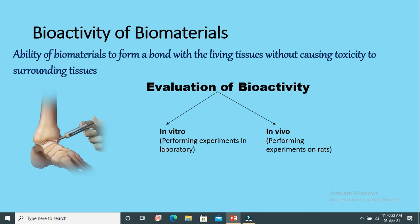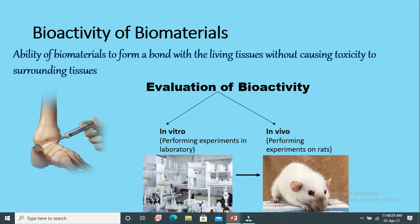In vitro, we perform the experiments in the lab, and for in vivo, we perform the experiments on rats. First we evaluate in vitro, then we go for in vivo. If in vitro confirms the bioactivity of our biomaterial, then we implant this biomaterial in rats or another animal.